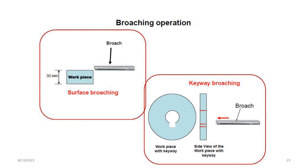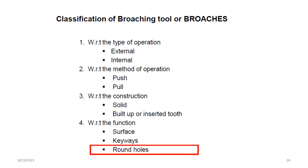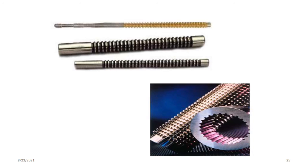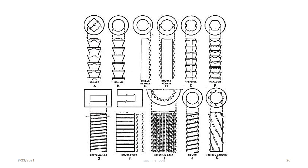With respect to function, broaching is classified into surface broaching, keyway broaching, and round hole broaching. In surface broaching, a very small amount of material is removed from the top surface of the workpiece — this is called a surface broach. In keyway broaching, a keyway is provided in the workpiece. For round holes, different types of broaching tools are used. The broaching tool is a multipoint cutting tool used to cut the material.